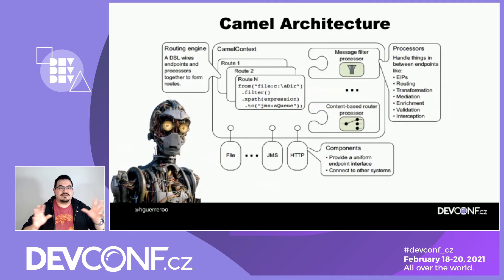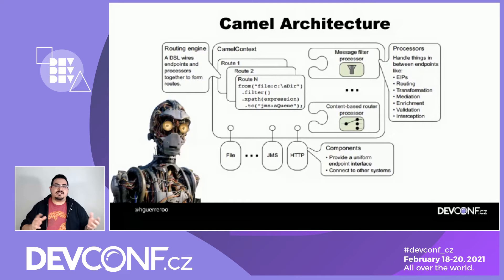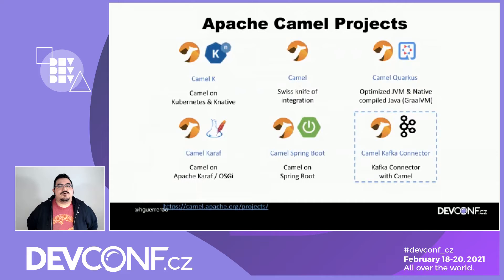The Camel architecture is more complex — like looking at C3PO's internals. There is the implementation of integration patterns, management of the context within routes, and so on. The interesting part is the concept of components that allows integration with other systems and transfer of information along your flows. Those are the components already available as part of Apache Camel that simplify your integration.